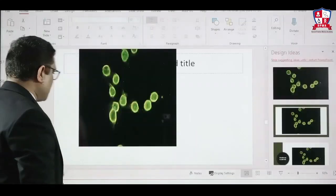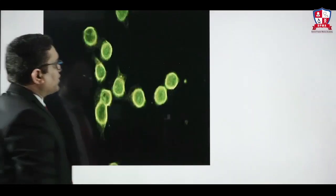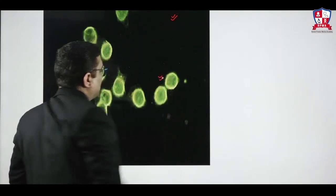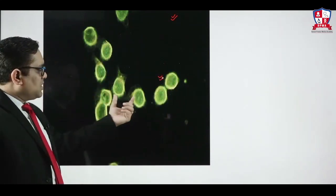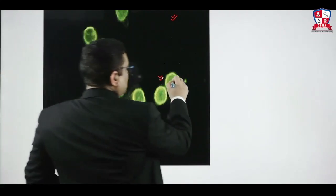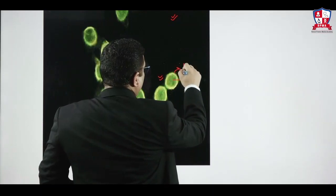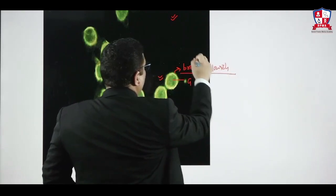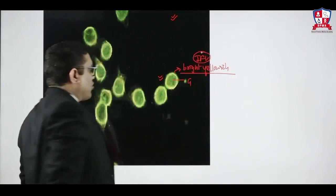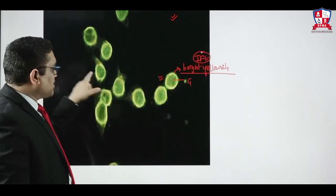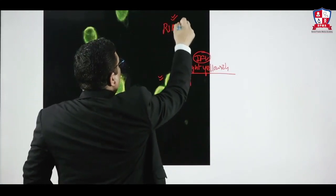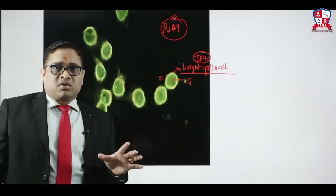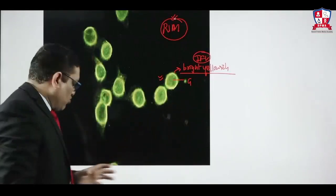Looking at the immunofluorescence image — background is dark, and you see green nuclei with a rim-like bright yellowish-green at the periphery. This is the rim pattern of immunofluorescence, corresponding to double-stranded DNA antibodies.